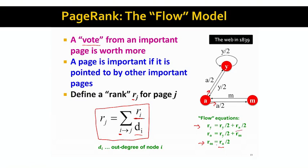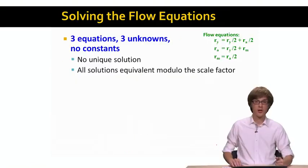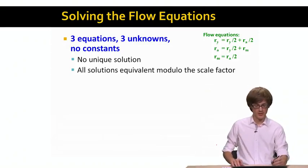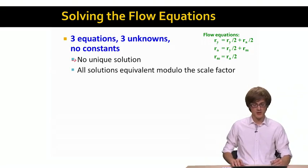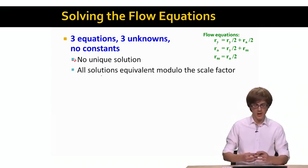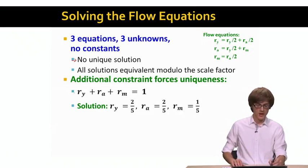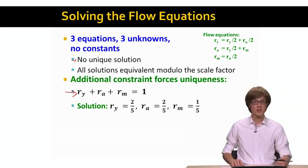It almost seems like we are done. We have a set of equations to solve — three equations and three unknowns. However, the problem is that this system has no unique solution because it is under-constrained; we can find an infinite set of solutions, all equivalent up to a scaling factor. We need an additional constraint: we require that the PageRank scores sum to 1, i.e., R_Y + R_A + R_M = 1. With this additional equation we now have four equations and three unknowns and can solve the system.